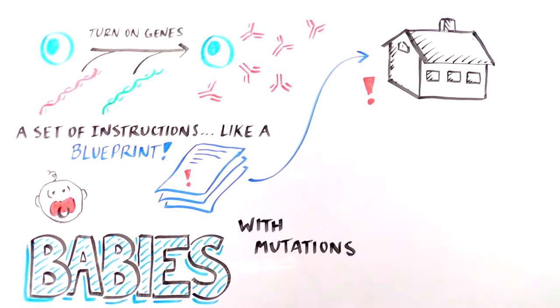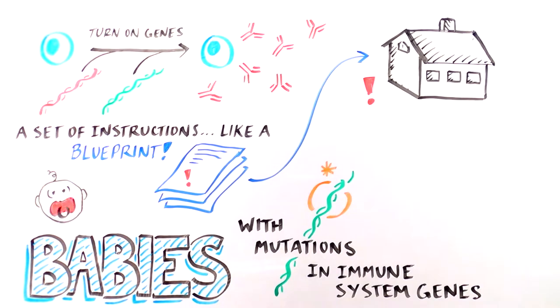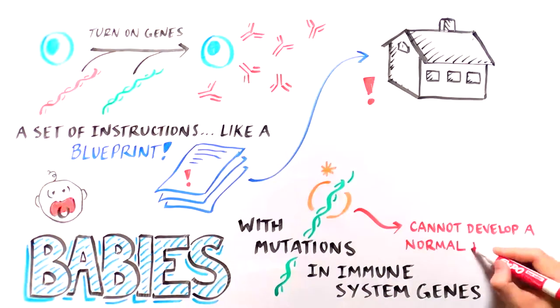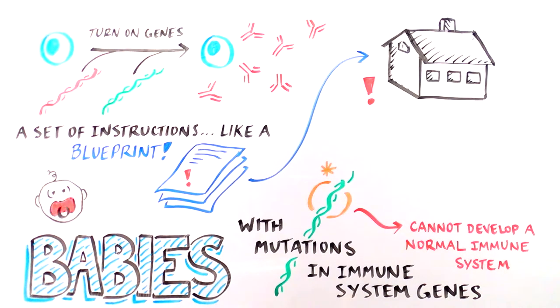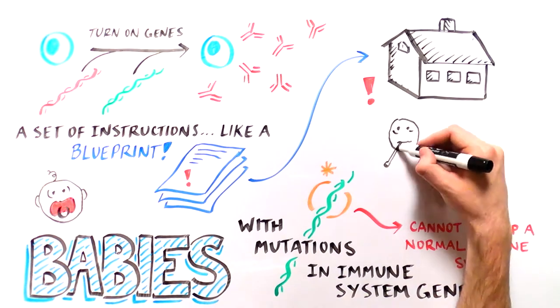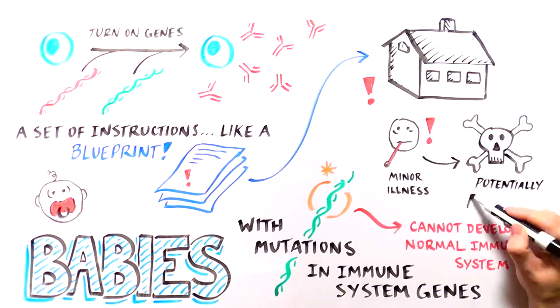Babies who are born with mutations in important immune system genes lack the correct blueprint, and as a result, they can't develop a normal immune system. Because their immune cells cannot fight off foreign invaders, even minor infections can be deadly.